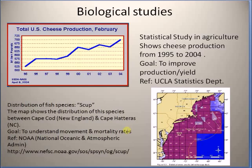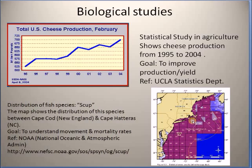Similarly, this plot — this map — shows the distribution of fish population in the North Atlantic Ocean, between the regions of New England, that is the North Eastern states, and Cape Hatteras in North Carolina. The goal of this type of research is to study mortality rates and movement trends of fish populations, that is fish schools, in this part of the ocean. This image is downloaded from the NOVA website.